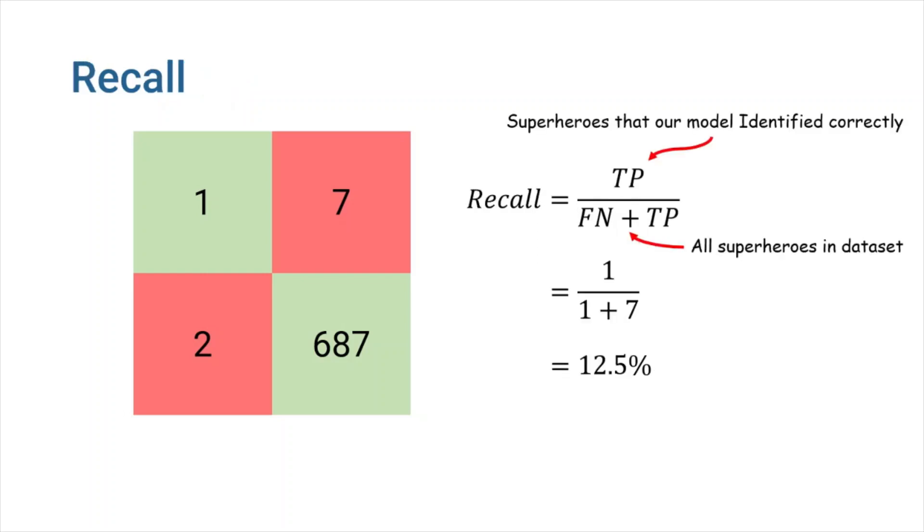One of the other metrics that we can use is recall or sensitivity. It measures the ratio of positive values that are correctly classified. In our case, it is the number of superheroes that our dumb model correctly identified divided by the number of superheroes in the dataset.